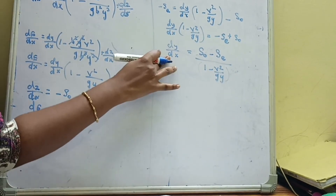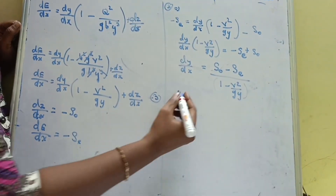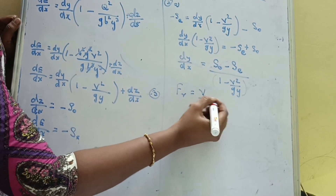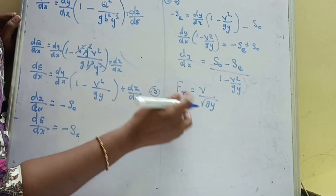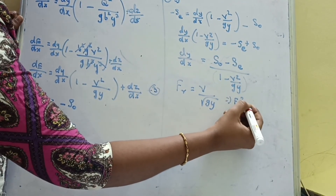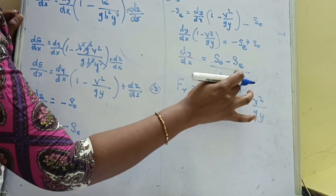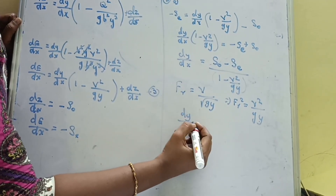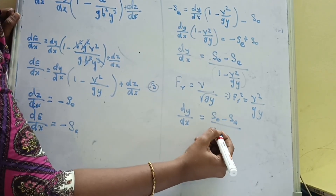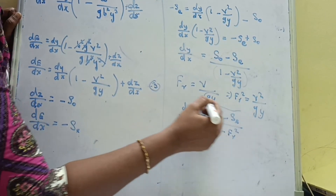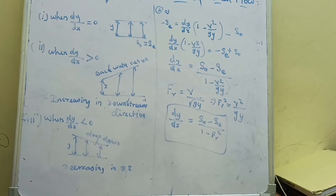This is the equation for the slope of the free water surface: dy/dx equals (S-naught minus S-e) divided by [1 minus V-squared/(gy)]. Now we express this in terms of the Froude number. The Froude number Fr equals V divided by root(gy), so Fr-squared equals V-squared divided by (gy). Substituting: dy/dx equals (S-naught minus S-e) divided by (1 minus Fr-squared). This is the slope of the free water surface in terms of the Froude number.